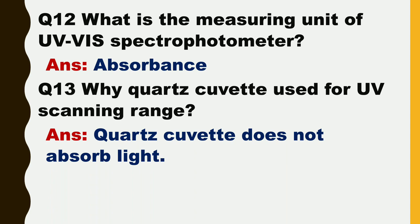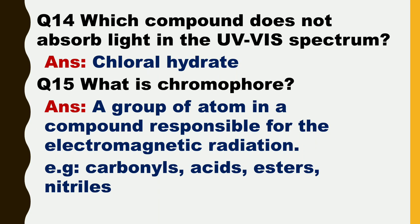Next question is: what is the measuring unit of UV visible spectrophotometer? The measuring unit of UV visible spectrophotometer is absorbance. Next question is: why are quartz cuvettes used for UV scanning range? Because quartz cuvettes do not absorb light.